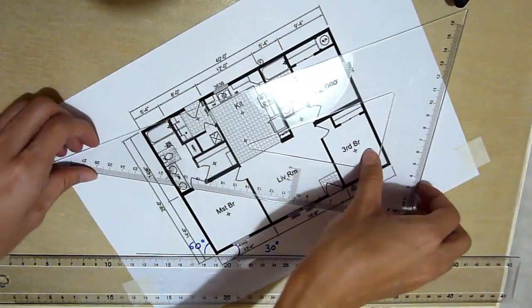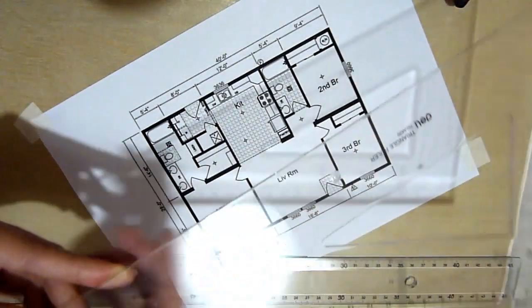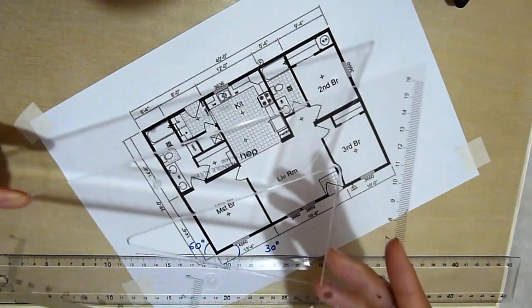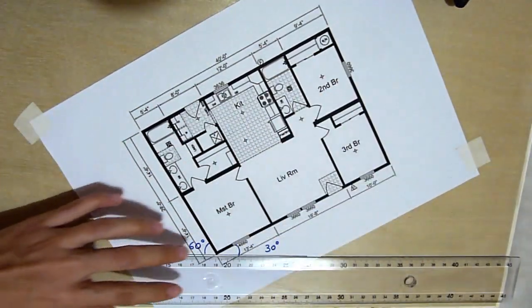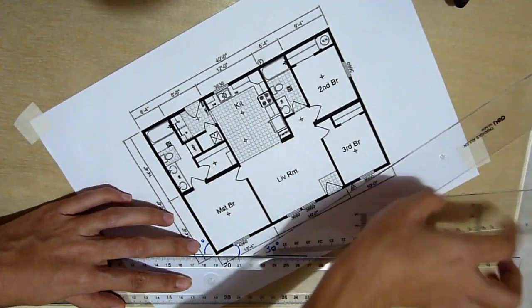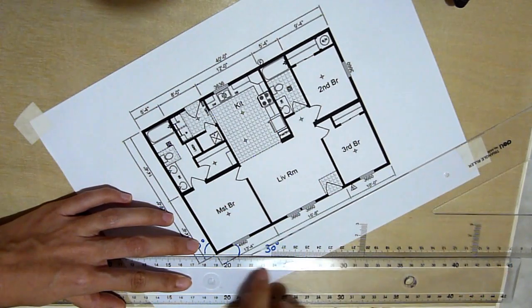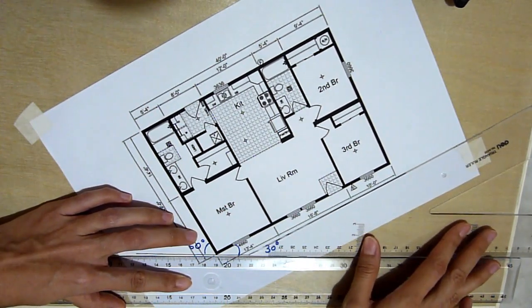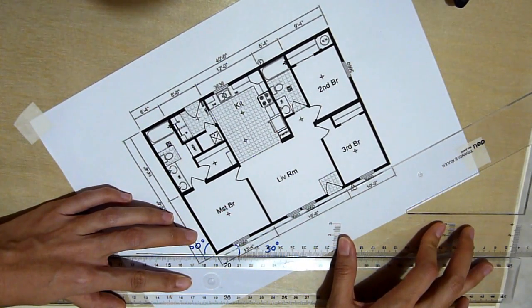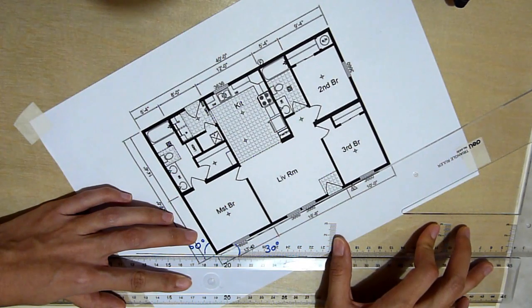This is a 60, so you can see a very long end here and a shorter end here. So in order to get a 30 degree, what you do is you slide this on top of the t-square and you allow it to meet the corner of this floor plan.